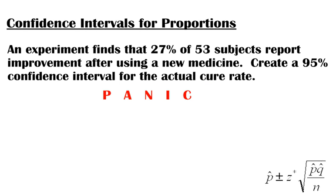So let's go ahead and get started with this and read our example and then go through PANIC to create our confidence interval and in this case remember we are dealing with proportions. If it was means things would be slightly different but they would follow the same pattern using PANIC. Here we go. An experiment finds that 27% of 53 subjects reports improvement after using a new medicine.